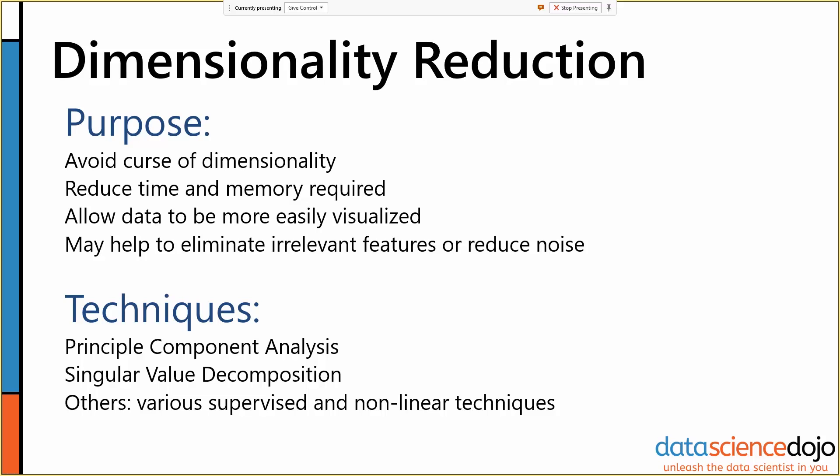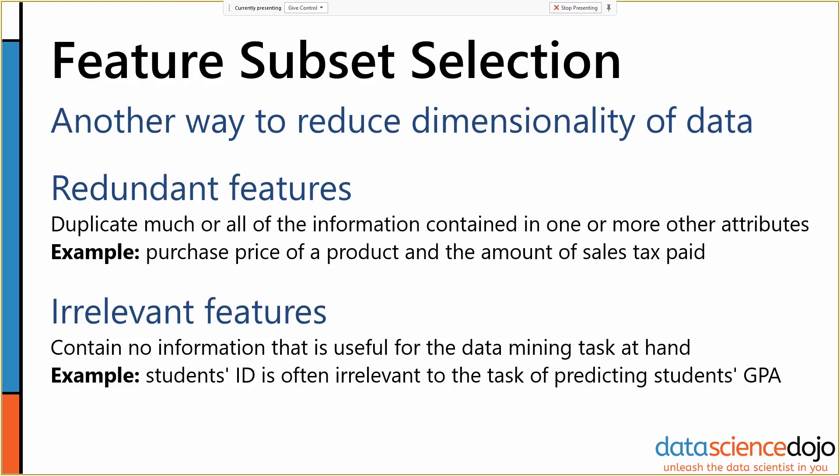Another way to reduce dimensionality of data, other than just PCA, is that a lot of times we have redundant or irrelevant features. This goes back to Teresa's questions about dimensions being independent. So if we have redundant features or irrelevant features, that will increase our dimensionality artificially. It contains little to no information, but it increases our dimensionality.